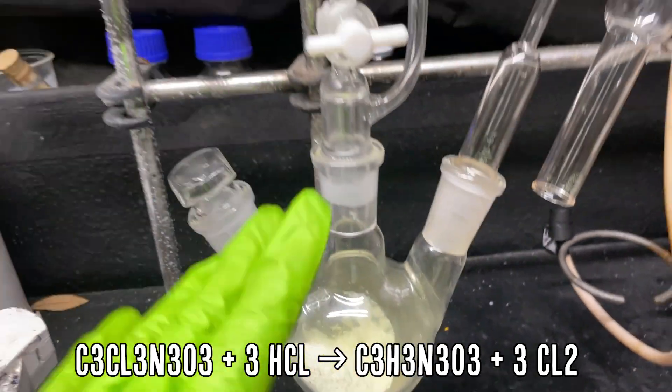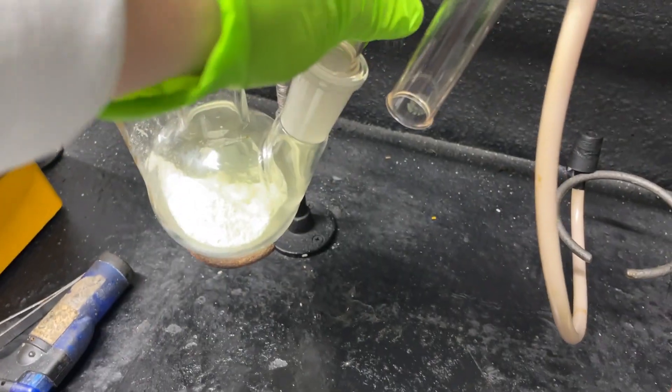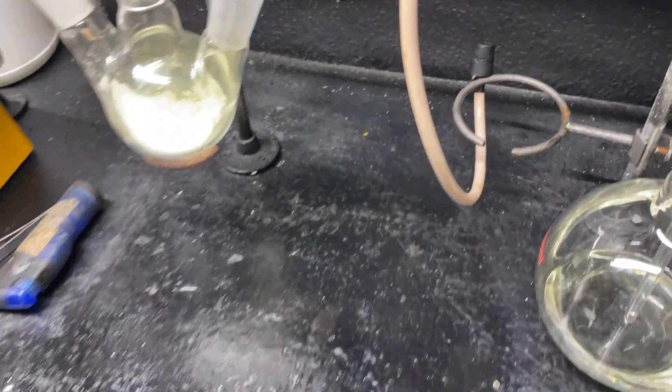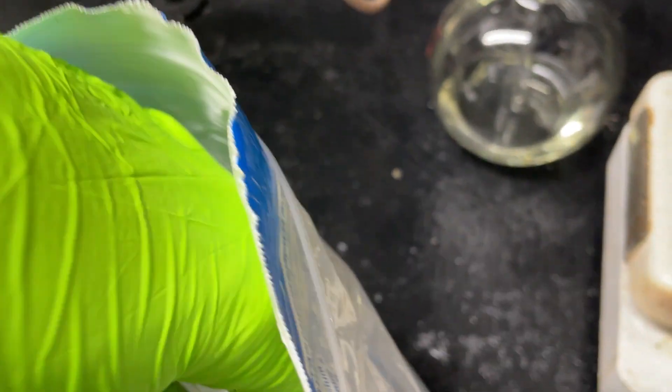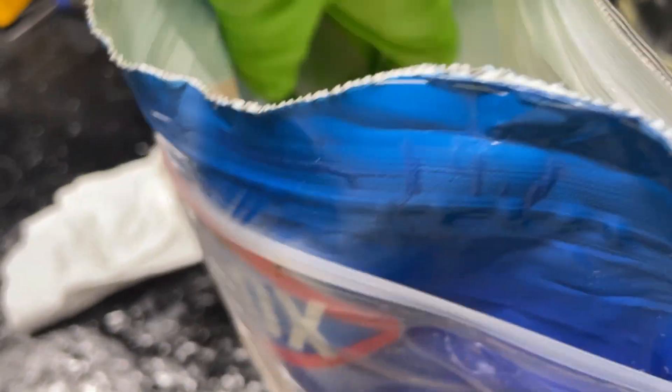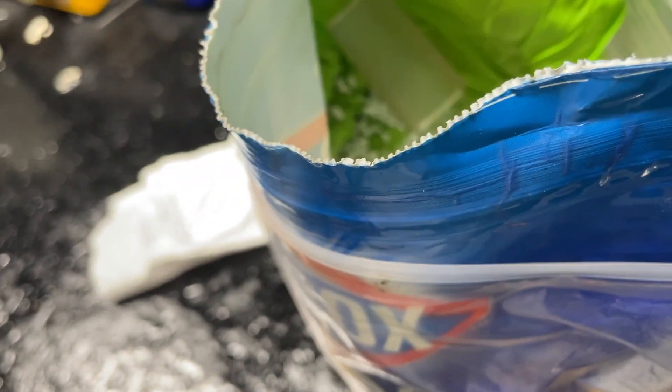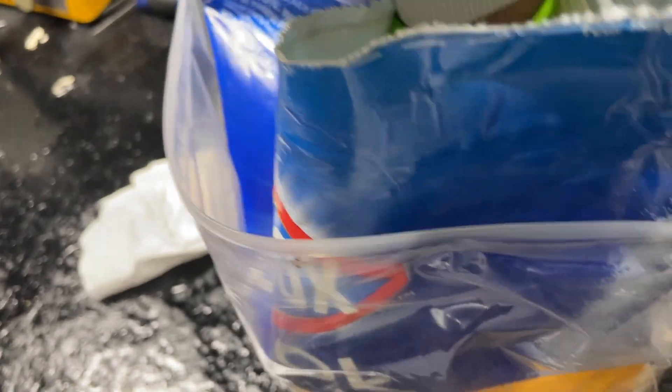Because some of it accidentally spilled down the pressure equalizer but that's fine. Chlorine gas is also highly toxic so don't do this. I'm going to take this off for a second and fill this with calcium chloride, anhydrous calcium chloride, because this is a drying agent - means it dries things.